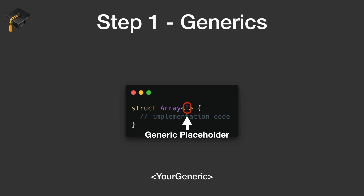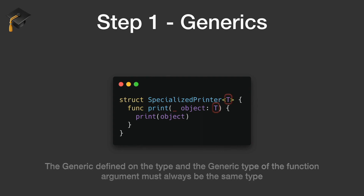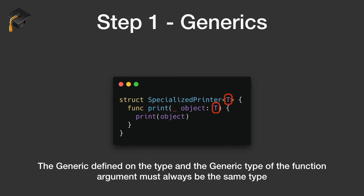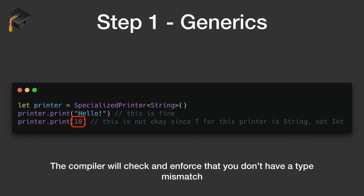Let's think of something very simple we could do with generics. You could make a specialized printer — it's generic over T, it has a method print, it takes an object of type T, and it prints it. Note that the generic defined on the type and the one given to the print function have to be the same. Once you determine that T is a String, it's forever a String for that instance. So we can print 'hello' — that's fine. Printing 10 is not fine because 10 is an integer, not a String. The compiler will enforce this, allowing a flexible but constrained printer.